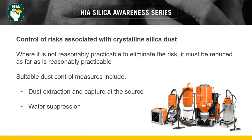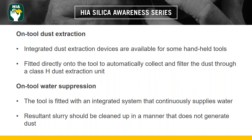Where it is not reasonably practicable to eliminate the risk, it must be reduced as far as reasonably practicable. Suitable dust control measures include dust extraction and capture at the source, and water suppression. For on-tool dust extraction, integrated dust extraction devices are available for some handheld tools — these self-contained units are fitted directly onto the tool and automatically filter and collect dust. For on-tool water suppression, the tool is fitted with an integrated water delivery system that continually supplies water, and the resultant slurry should be cleaned up in a manner that does not generate dust.